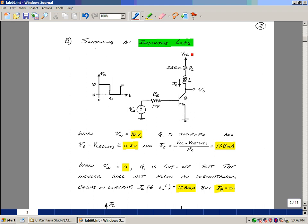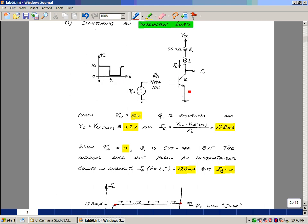So if this was 10 volts, and this was 0.2, and this was 550 ohms, we'd have about 17.8 milliamps. Now when the input goes low, we cut off the transistor, which means the current through it is zero.